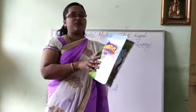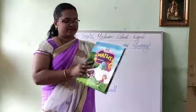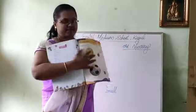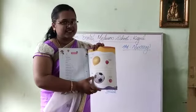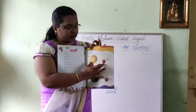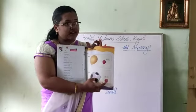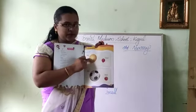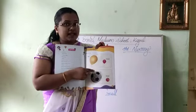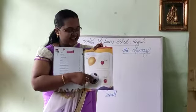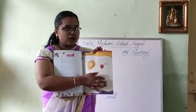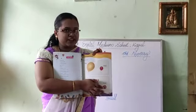Now if you take your math test book. See here — two balloons and two balls are given. This balloon and this ball, these two are big objects. And this balloon and this ball, these two are small objects.